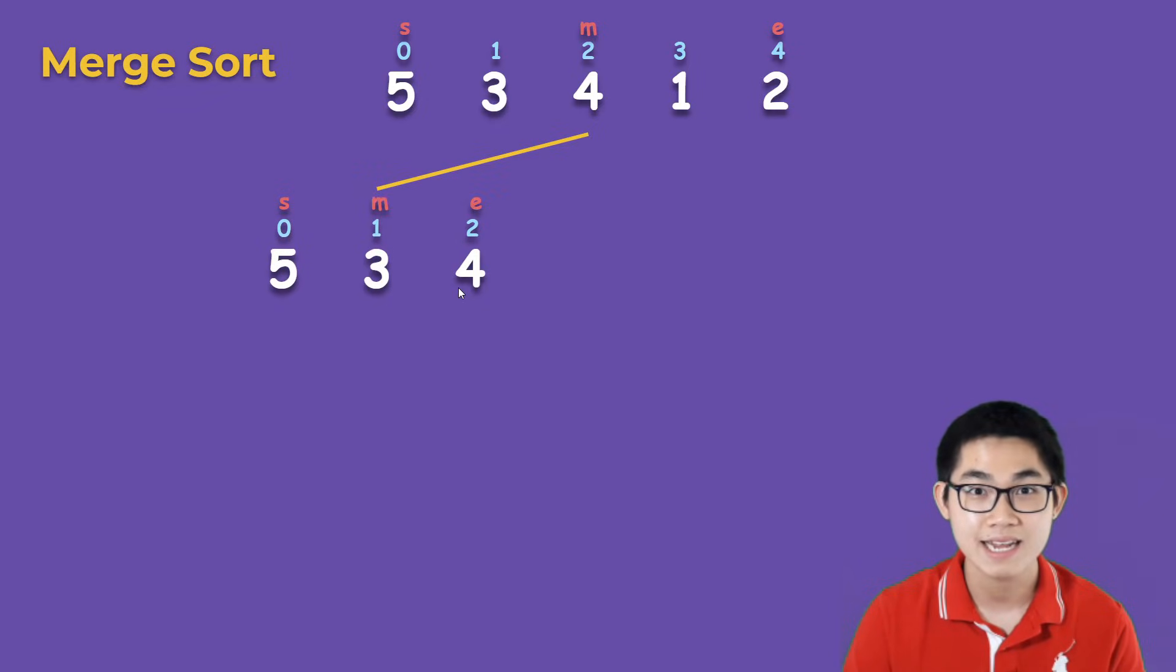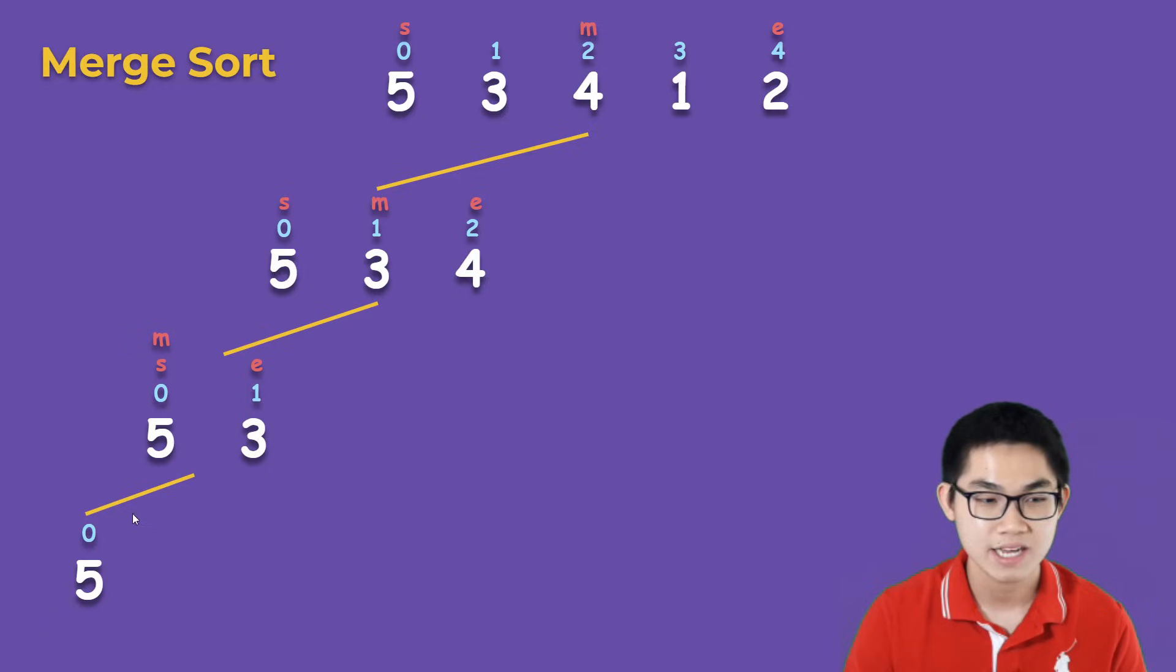Then we calculate the start, the end, and the mid again, and we split it from the start to the mid, so we get 5 and 3. Then we calculate the start, the end, and the mid. We get this, and then we're going to split it into 5. Here the second group will be 3.